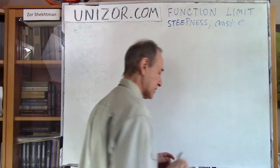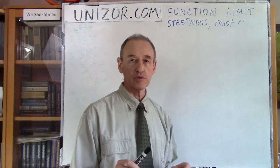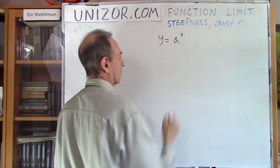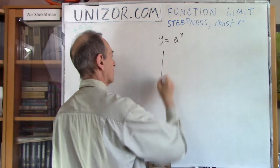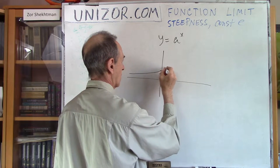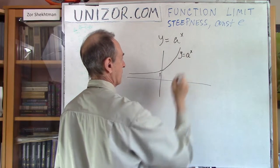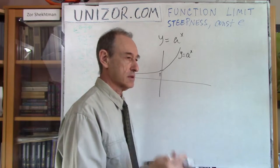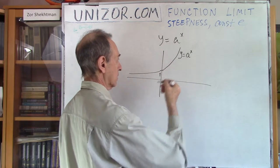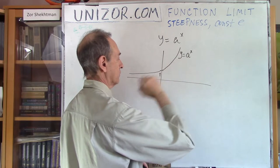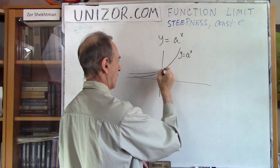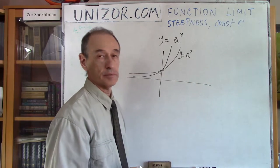First of all, let's talk about steepness. The concept of steepness was actually introduced before in this course when I was talking about the function a to the power of x — the exponential function. In particular, we were talking about this graph. Different values of a obviously result in different graphs. The greater the value of base a, the steeper the graph at the point zero.